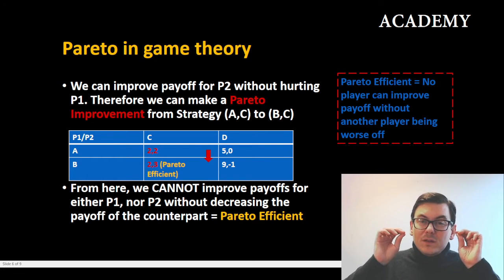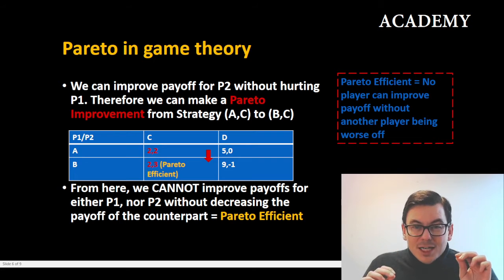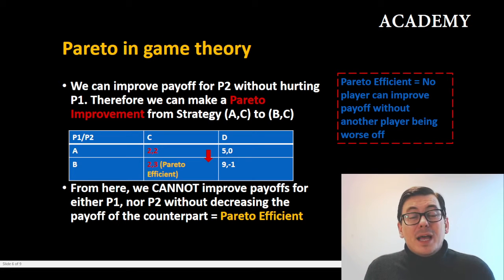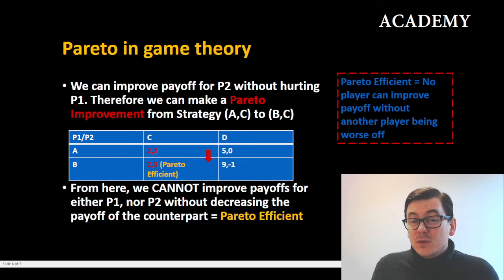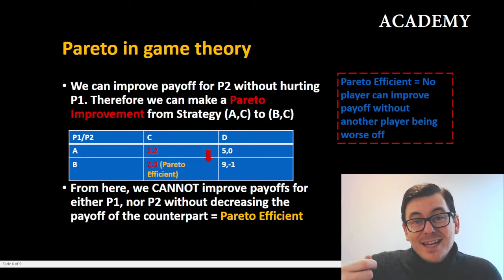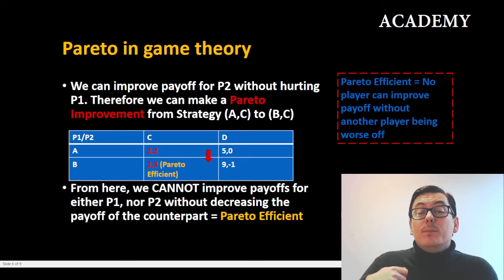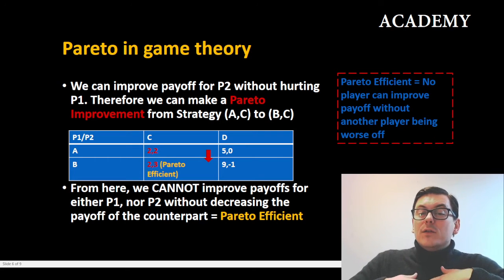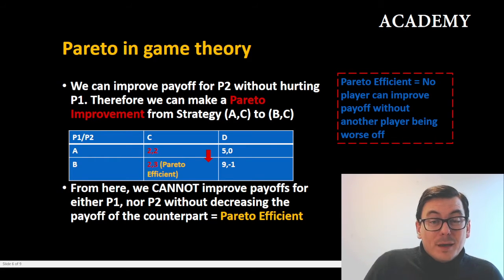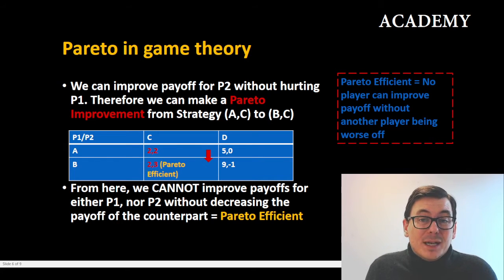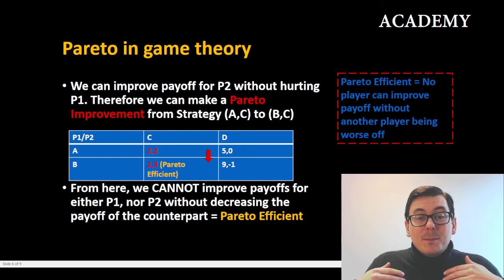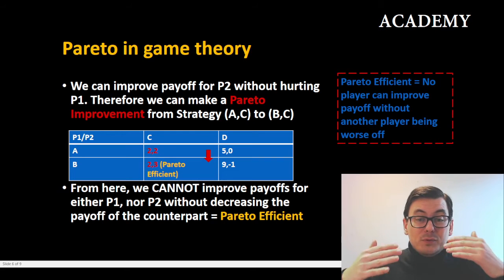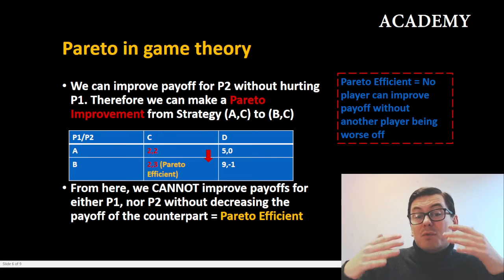Looking at strategy BC, player one gets a payoff of two and player two gets a payoff of three. So we can actually make a Pareto improvement by moving from AC to BC, because player two will get one more in payoff without hurting player one. Here we can make a Pareto improvement, which we should strive to do.